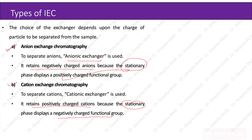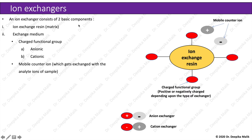An ion exchanger consists of two basic components: first is the ion exchange resin or matrix, and second is the exchange medium, which contains two components — the charged functional group, which may be anionic or cationic depending upon the type of exchanger, and mobile counter ions, which get exchanged with the analyte ions after the sample is applied to the column. The diagram shows an insoluble ion exchange resin in the center to which charged functional groups are attached, shown in red. These may be positively or negatively charged depending upon the type of exchanger. The mobile counter ion will form an ionic interaction with the oppositely charged functional group.